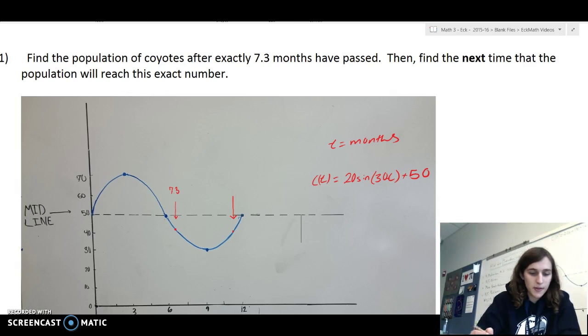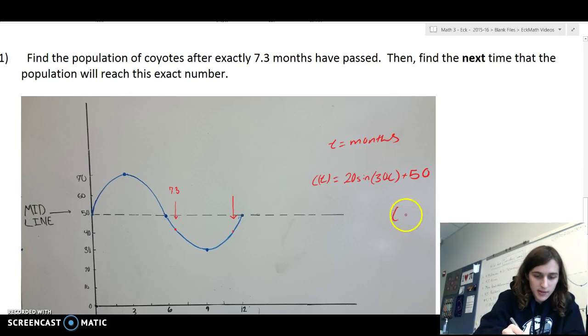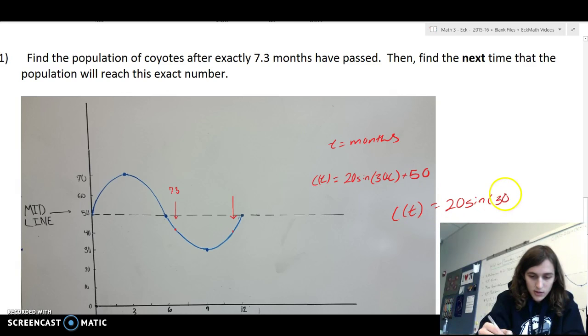So, we know the equation is c of t equals 20 sine times 30t plus 50. And we can figure out the population of them after exactly 7.3 months through this equation. By plugging in, we know that t is the months, and so we can say c of 7.3 equals 20 sine times 30 times 7.3 plus 50.